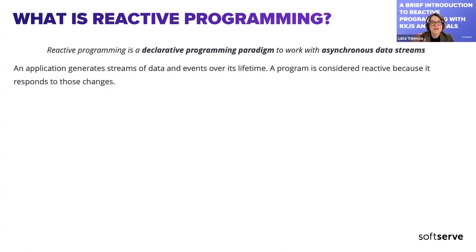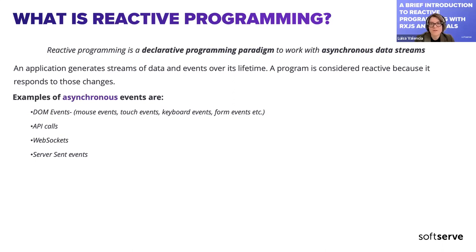Moving to asynchronous data streams: examples of asynchronous events include DOM events, API calls, WebSockets, and server-sent events, which are common in our daily work. We have API calls for getting data, DOM events from user actions like mouse and keyboard events. These are asynchronous because they don't happen sequentially — they happen at different moments in time.